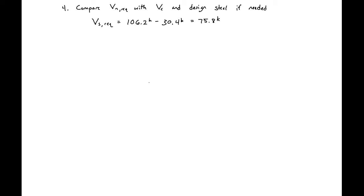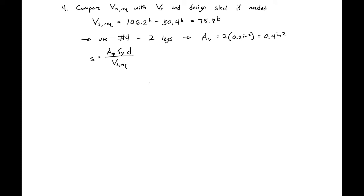In this problem we're going to assume we're using number 4 bars with two legs. So our A_v is equal to 2 times 0.2 square inches, giving A_v = 0.4 square inches. We can use A_v and V_s required to find our required spacing: S = A_v × f_y × d / V_s required = 0.4 × 60 ksi × 21.5 inches / 75.8 kips, giving a required spacing of 6.8 inches.